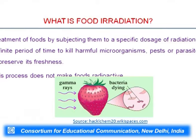In food irradiation, foods are subjected to specific doses of radiation for a definite period of time to kill harmful microorganisms, pests, parasites, and other organisms to preserve freshness. Importantly, this process does not make food radioactive, which is why it is very important to us.